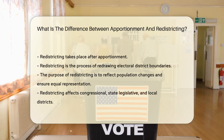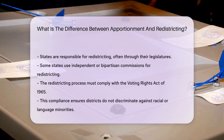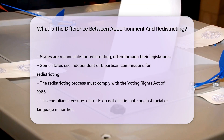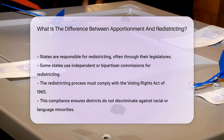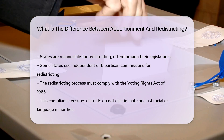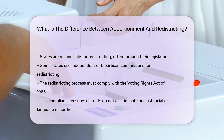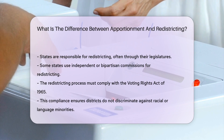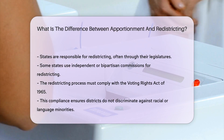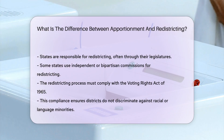States are responsible for redistricting, often through their legislatures. Some states use independent or bipartisan commissions. The process must comply with the Voting Rights Act of 1965. This ensures districts do not discriminate against racial or language minorities.